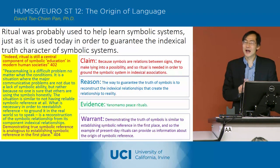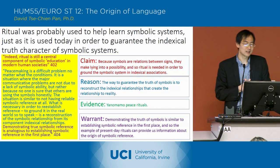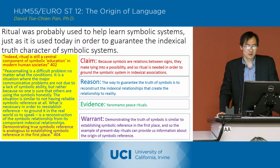Finally, Deacon talks about how this initial symbolic system could have been set up. He says that it was probably ritual that was used to help set up and learn symbolic systems. The evidence he uses here is rituals that humans use today.